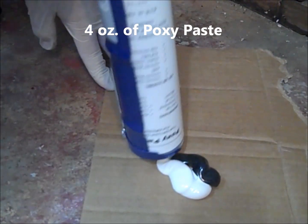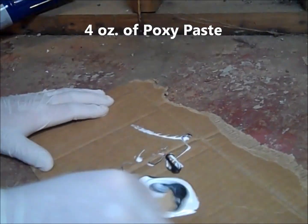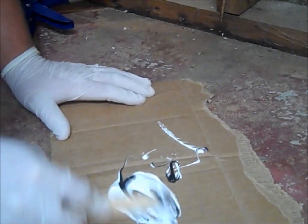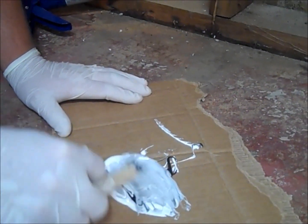Dispense approximately 4 ounces of epoxy paste onto a piece of cardboard. Mix the two parts until a uniform gray color with no streaks is obtained.